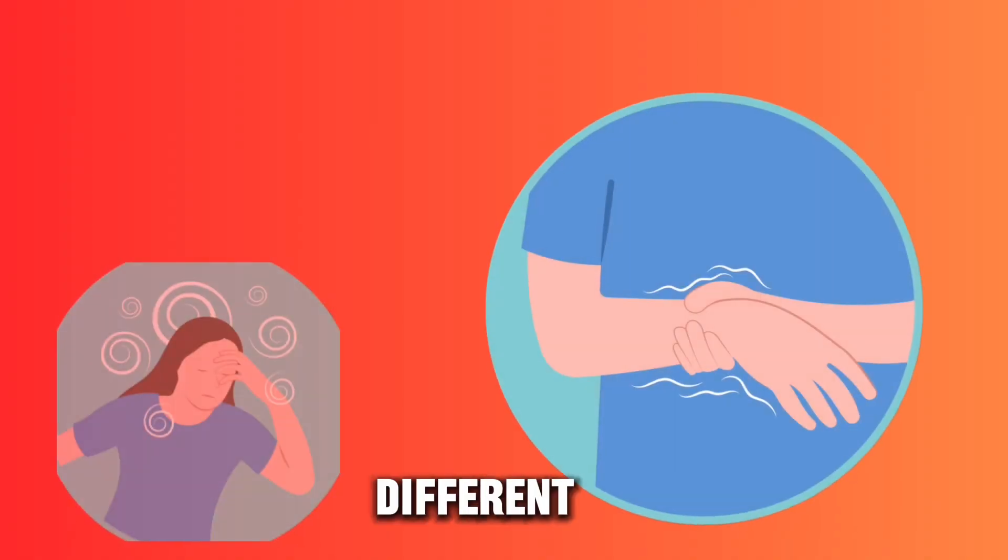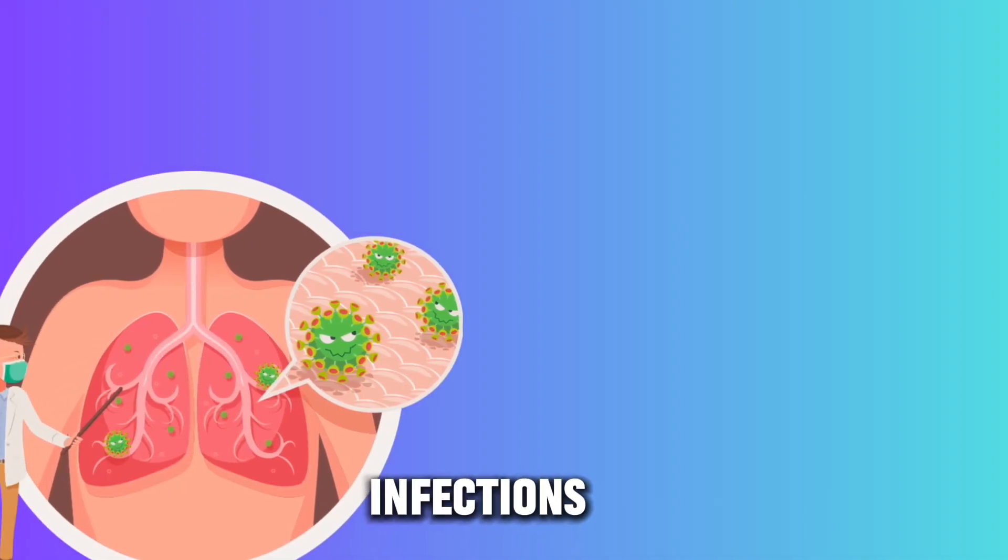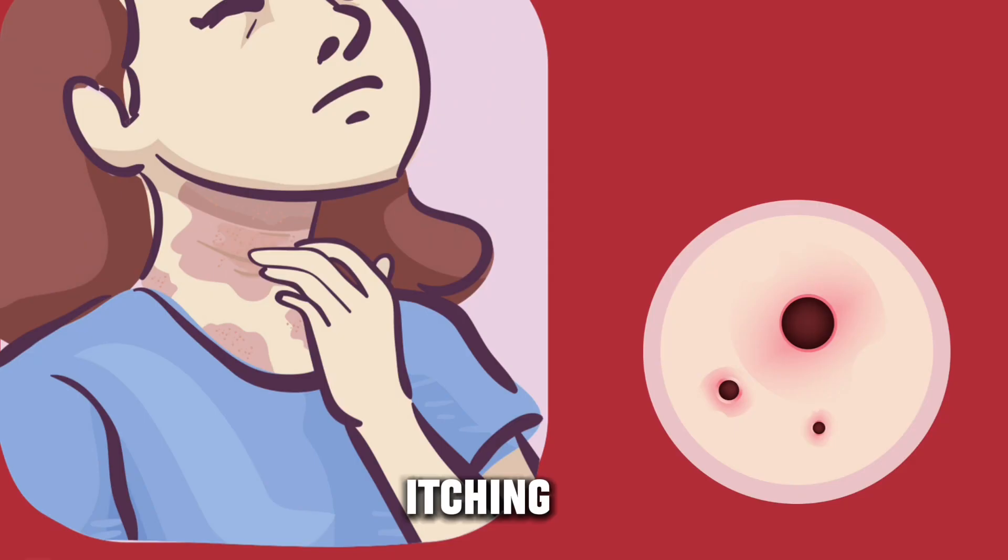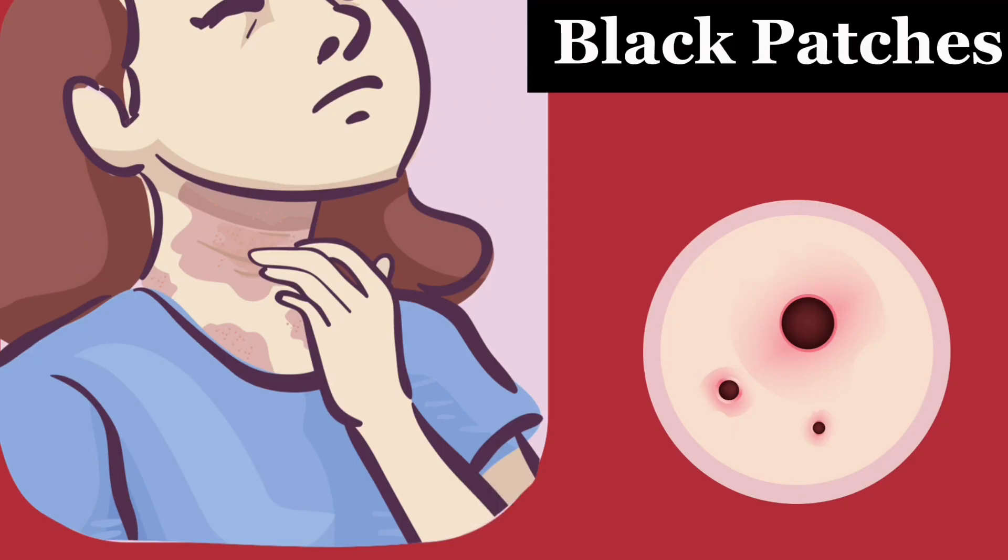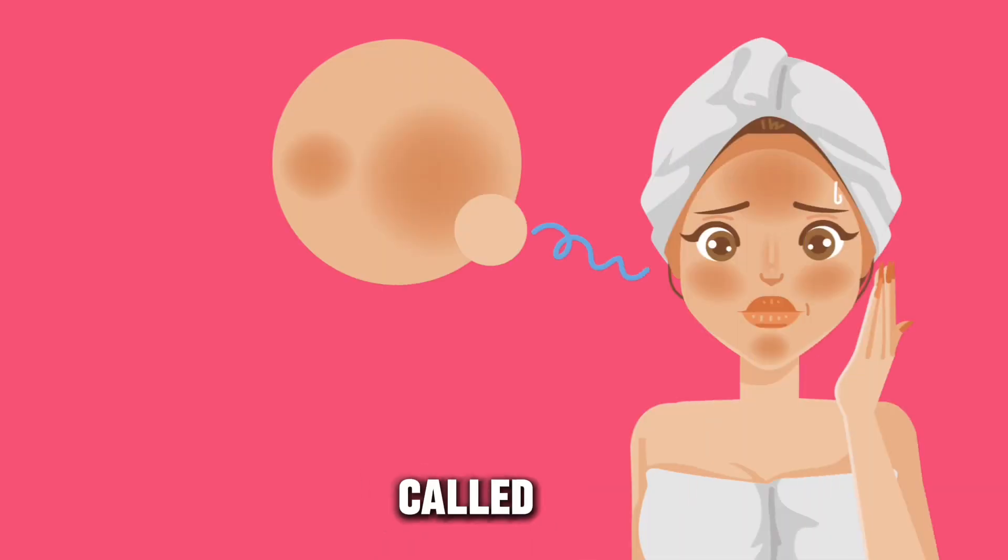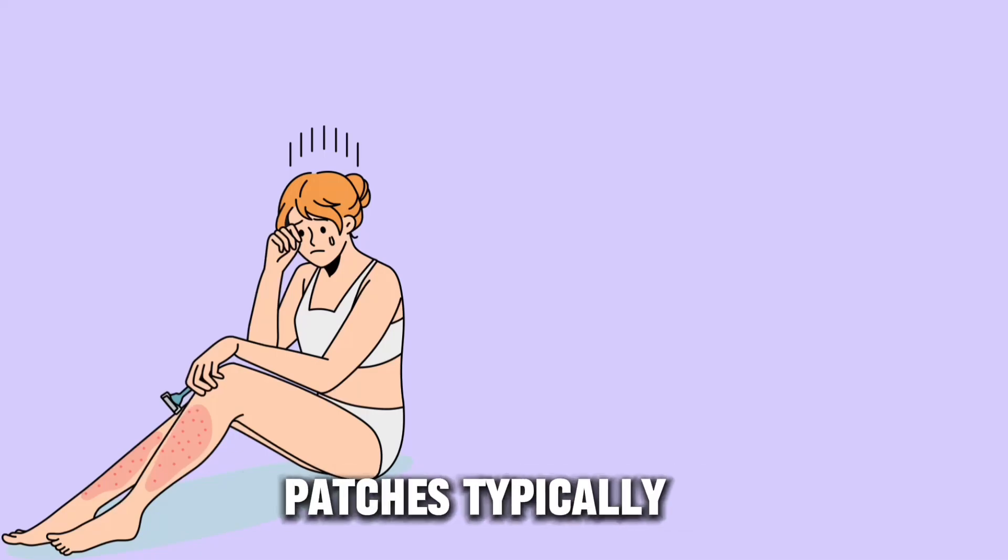Number two: black patches. A skin condition associated with diabetes that can cause darkened, velvety patches is called acanthosis nigricans. These patches typically appear in skin folds and creases, such as the neck, armpits, groin, and sometimes the elbows and knees.